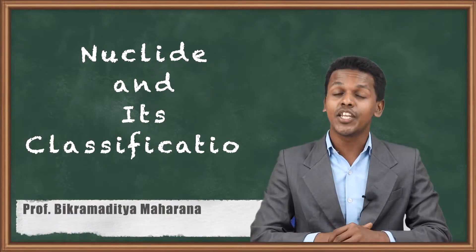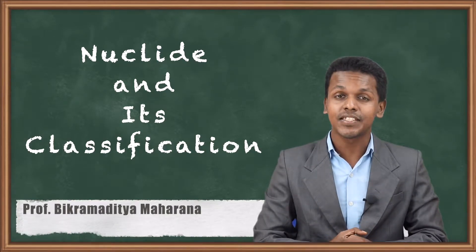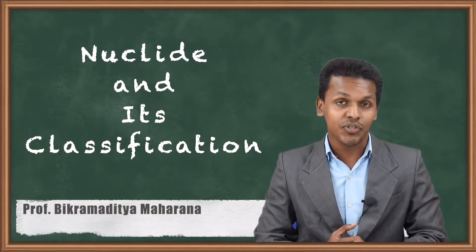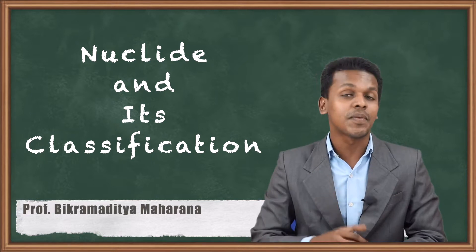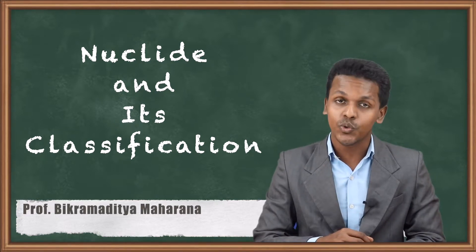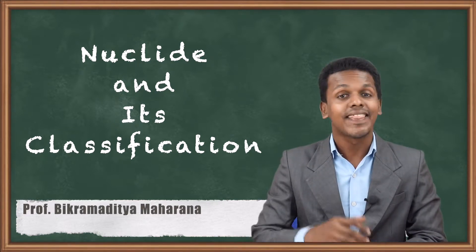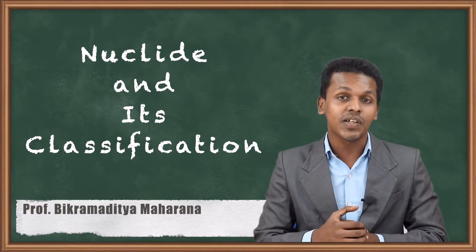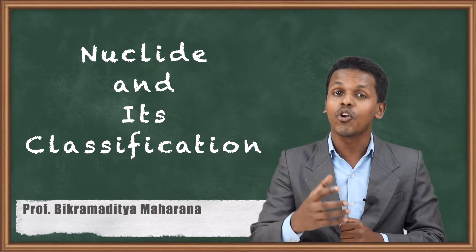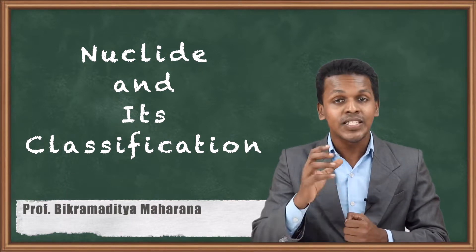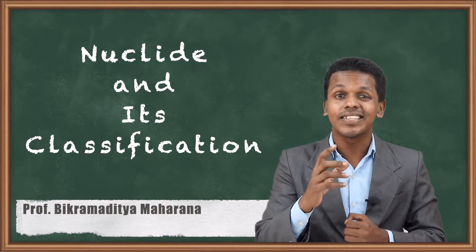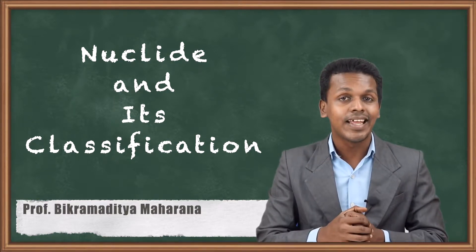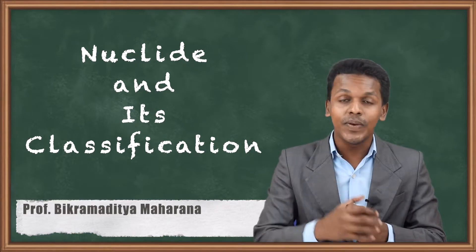Hello friends, we are starting a new chapter: nuclear chemistry. Before understanding nuclear chemistry, it is very important to understand that an atom consists of electrons, protons, and neutrons. Since we are talking about nuclear chemistry, let us understand the nucleus of a particular atom.